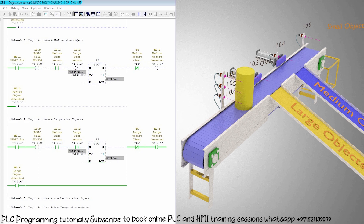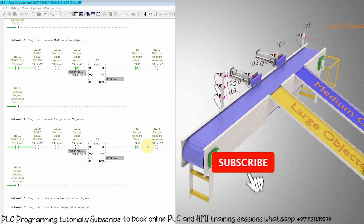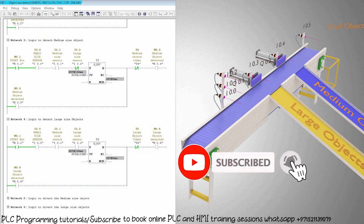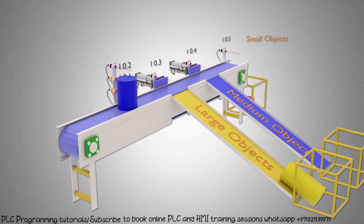So this is how to make a ladder logic to detect objects with different heights or sizes. In the next part of this video tutorial we will learn how we can sort these objects depending upon their sizes. I hope you liked today's tutorial — do share, like, and subscribe to my channel to get notifications of newly uploaded videos. Till next time, take care, goodbye.